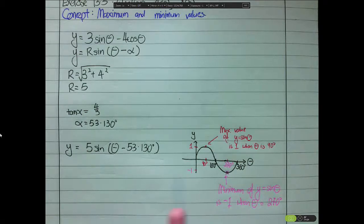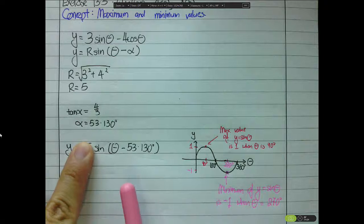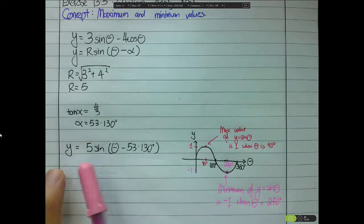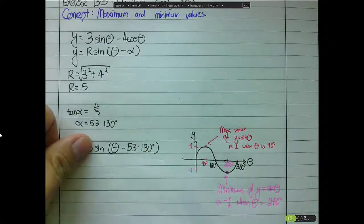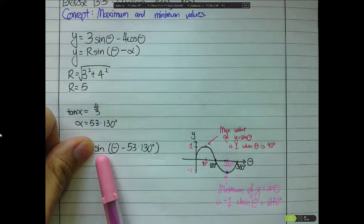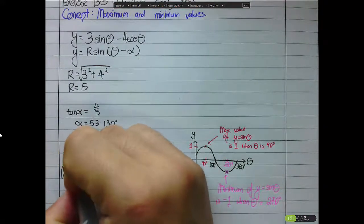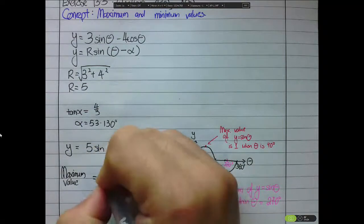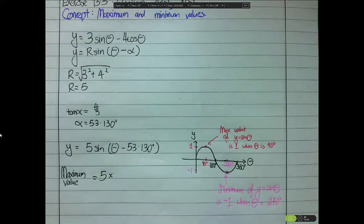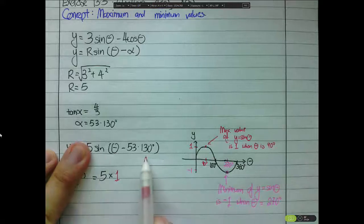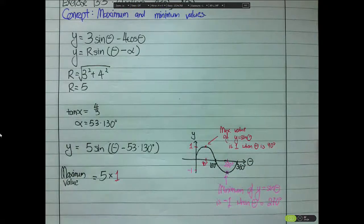For the maximum value: the maximum of the sine function is 1, so 1 × 5 gives a maximum value of 5. The maximum value is 5 × 1 — I'm writing the 1 in red to indicate that this portion equals 1 — so maximum value is 5.